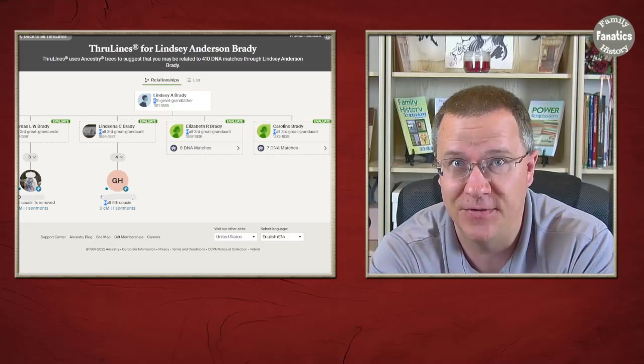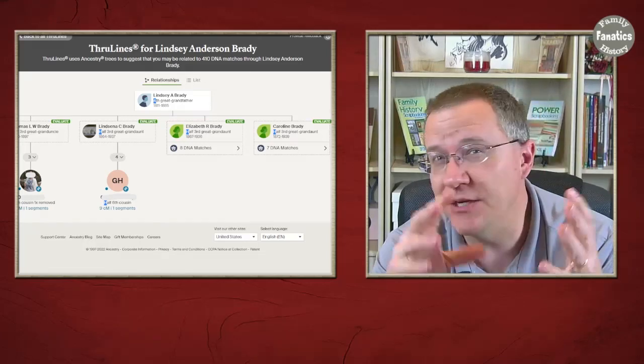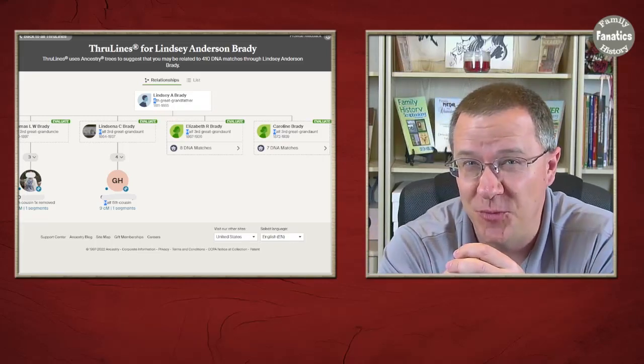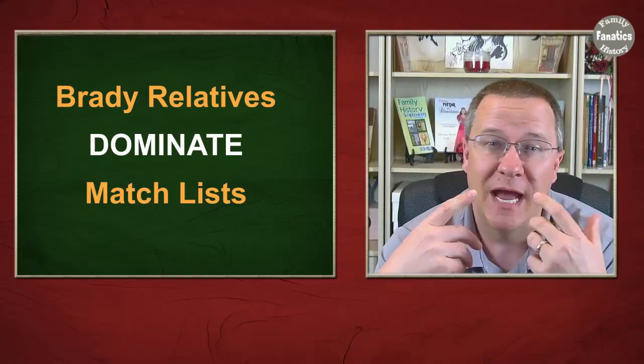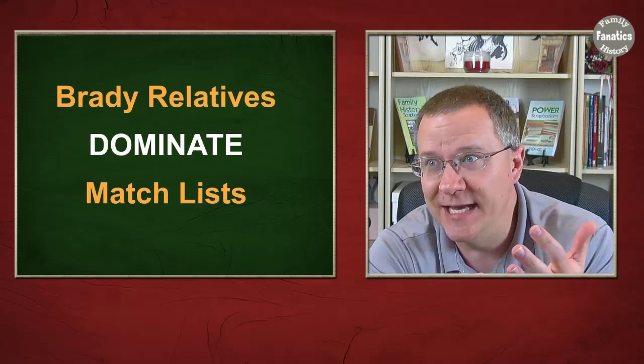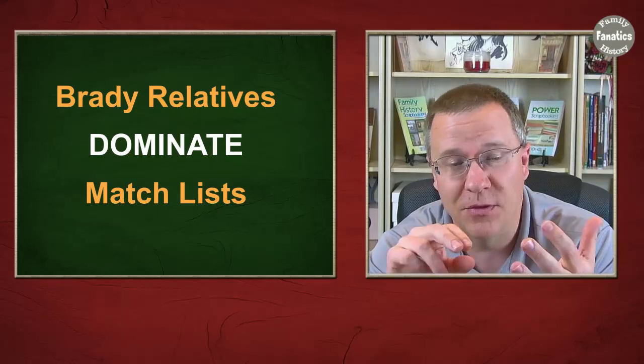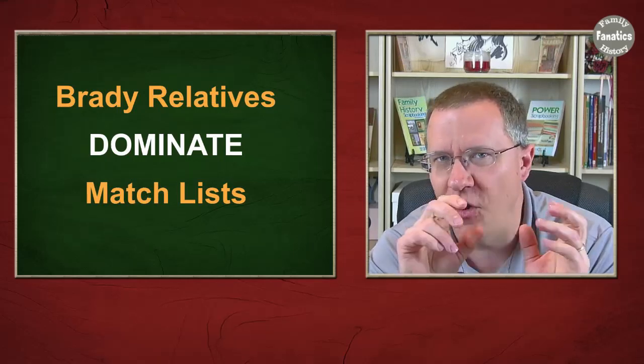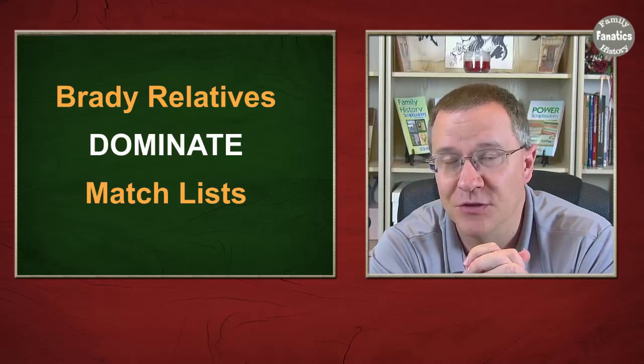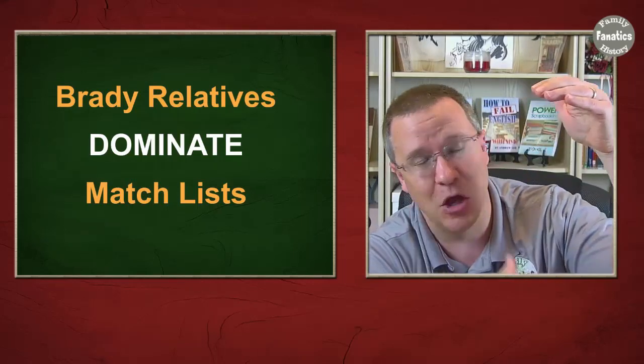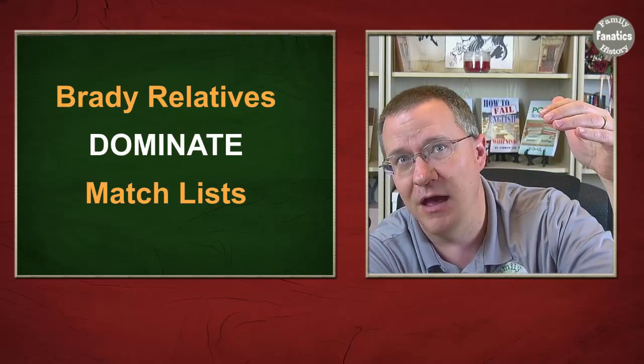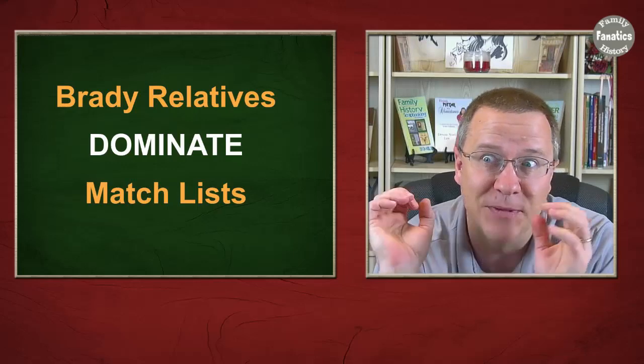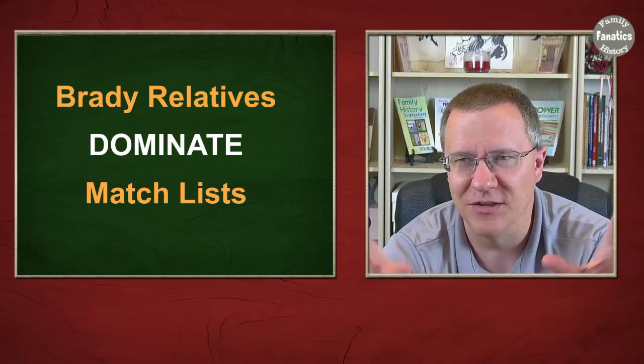So overall with Lindsey Brady I have 13 of his children identified that I have matches through. So getting to 413 matches means I've got lots of possibilities to be able to trace these through. Now from a practical standpoint, when I'm looking at match lists, because Lindsey and his wife Elizabeth are the majority of the fourth great grandparents, actually the majority of my matches all follow through Lindsey Brady. So for instance when I've made a Leeds chart, sometimes I have a good portion of them, more than half that are through this one line. In fact, I think it's almost 80 percent of all of my matches are through this one line.